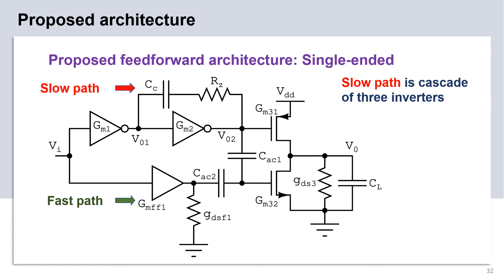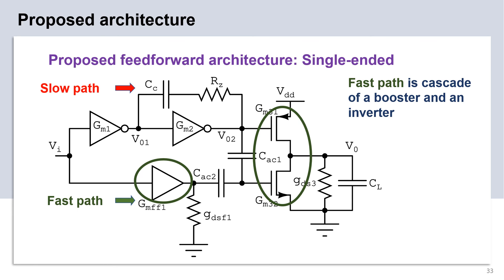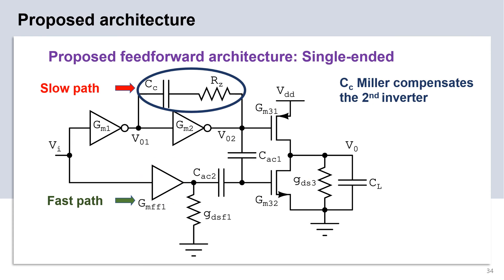This slide shows a three-stage inverter-based amplifier designed to illustrate the proposed feed-forward compensation technique. This is designed on the 65nm TSMC technology. Here, the slow path comprises three inverters as shown in the figure. The fast path is implemented as a cascade of a pre-amplifier stage GMFF1 and the last stage inverter. It can be seen that the last stage inverter is shared between the slow and the fast paths. The second inverter GM2 in the slow path is Miller compensated to ensure that the slow path behaves like a second-order system in the UGB. This prevents abrupt roll-off of gain in the bandwidth.